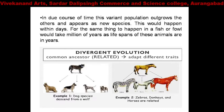Divergent evolution: a common ancestor is related with adopting different traits. For example, different dog species — where did they diverge from? From wolf. The wolf and dog share the same ancestor. From that same ancestor, wolf and dog descended as new diverged species. They share the common ancestor, both of them.